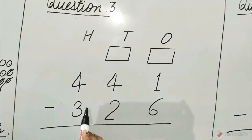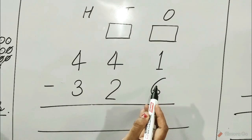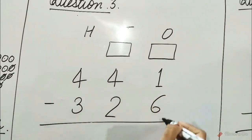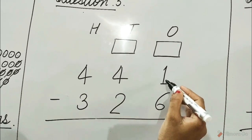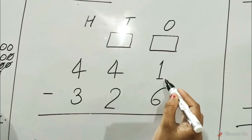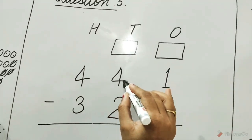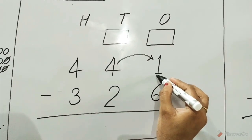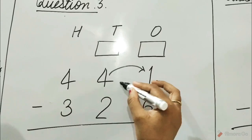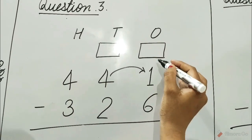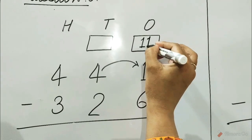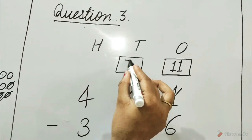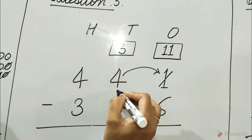Question number 3: 441 minus 326. Look at the ones column. 6 is bigger than 1 so it cannot be subtracted. We borrow 1 ten from the tens column and add it to the 1. 1 ten plus 1 one is equal to 11 ones. Write 11 at the place of 1, and 3 tens are left in the tens column.